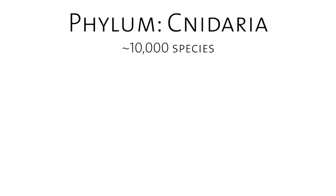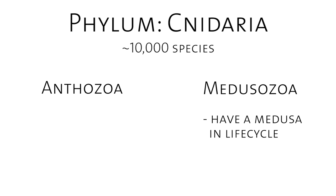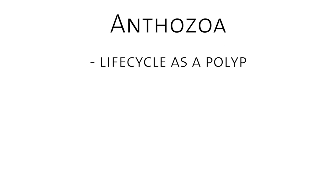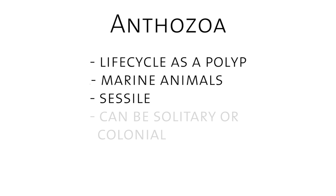Cnidaria is composed of two big groups: the medusozoa and the anthozoans. Medusozoans are characterized because they have a medusae, or jellyfish, in their life cycle. But anthozoans don't — they are only a polyp. Anemones are within anthozoans. Anthozoans are marine, sessile animals that live on the sea floor, and they are solitary or colonial, live in every marine environment, and number around 7,000 species.